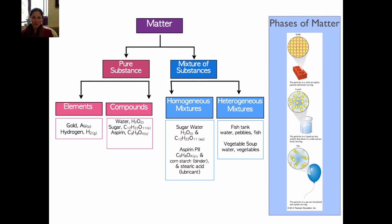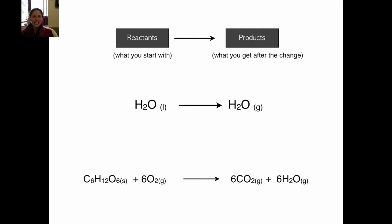Anytime a chemist wants to represent a change happening in matter, they use a chemical equation. The chemical equation has an arrow. On the back side of the arrow, usually on the left-hand side, are what we call the reactants — this is what you're starting with before the change happens. The arrow represents the change, and the thing at the front of the arrow, usually on the right-hand side, are the products — what you get after the change. Here we have two different equations, and I'd like you to pay attention to the chemical formulas on each side.